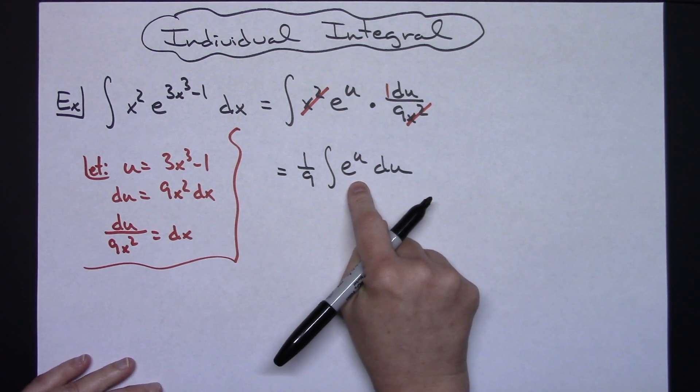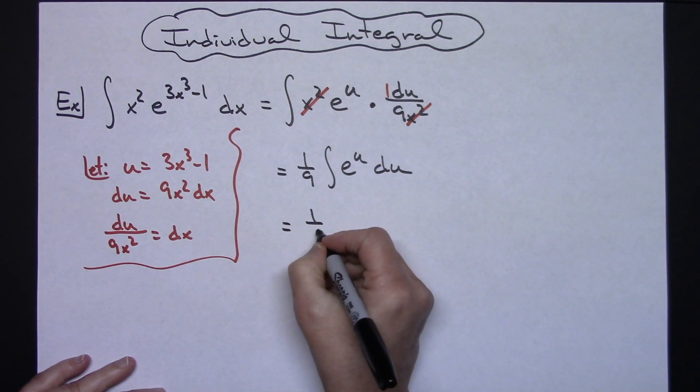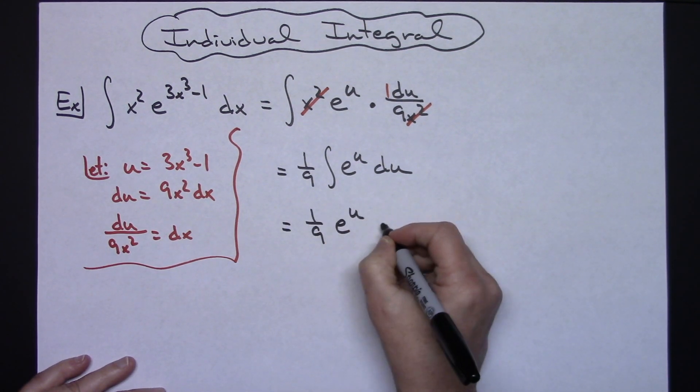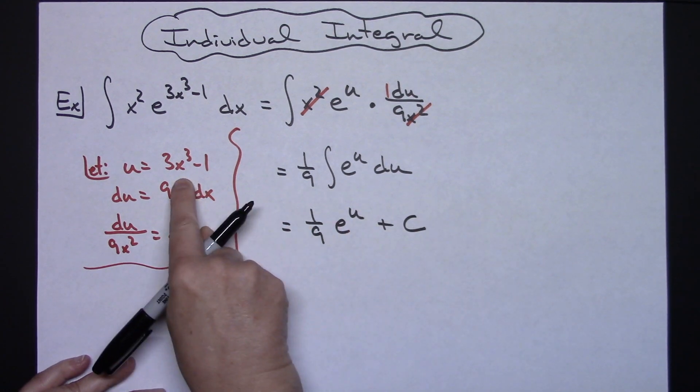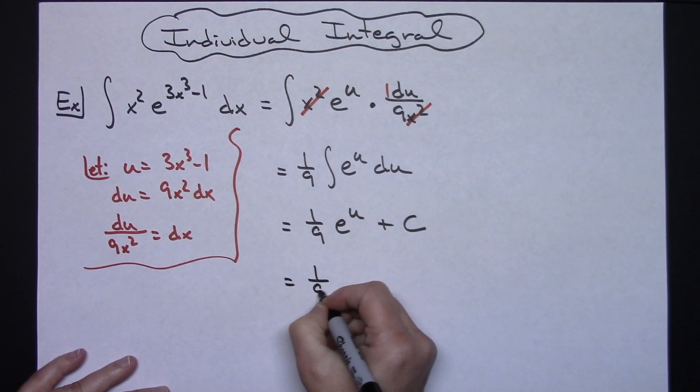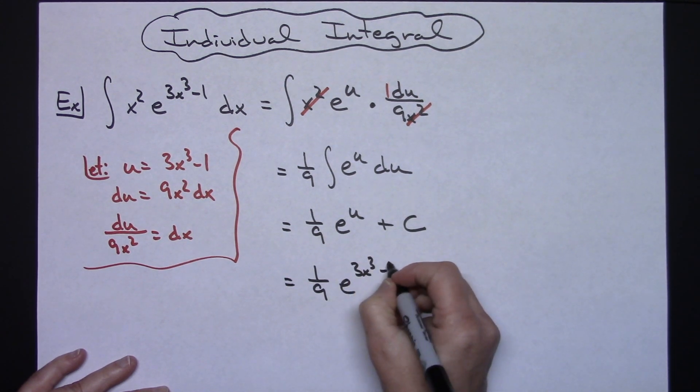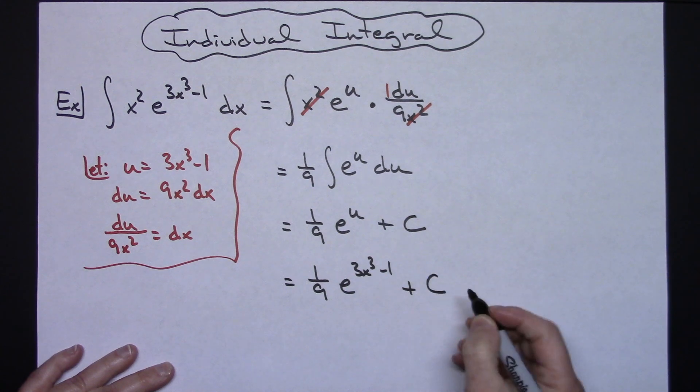And hopefully at this point you know that integrating e to the u is going to give me e to the u, so then I'm going to have 1/9th e to the u plus C. And then replacing the u with what it is, we'll have 1/9th e raised to the 3x to the third minus 1 plus C.